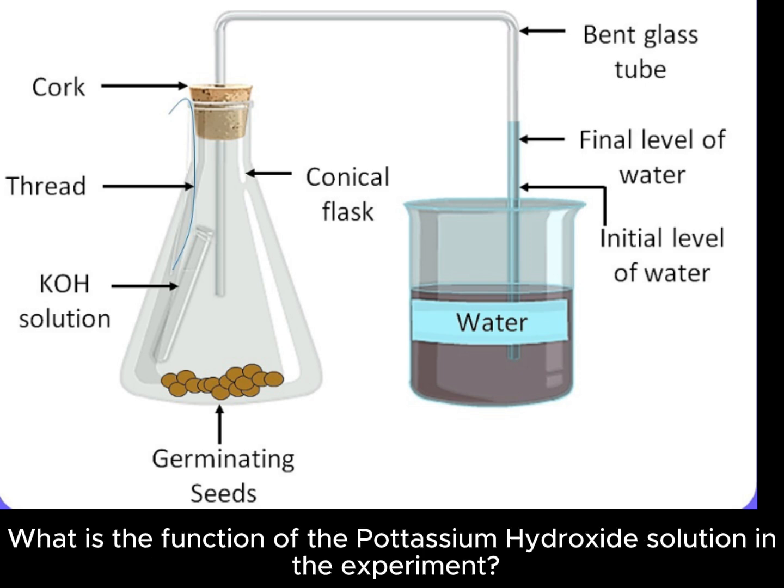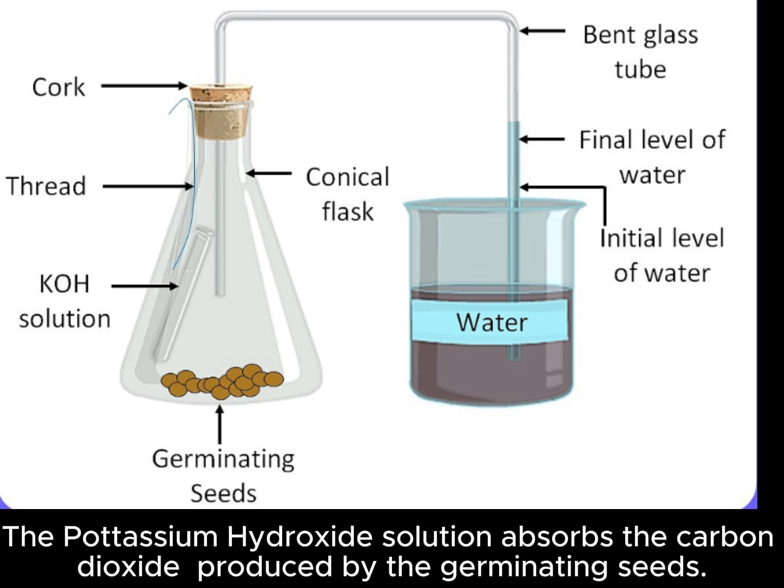What is the function of the potassium hydroxide solution in the experiment? The potassium hydroxide solution absorbs the carbon dioxide produced by the germinating seeds.